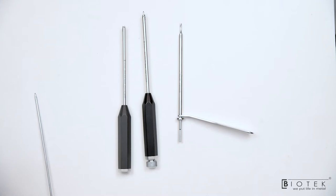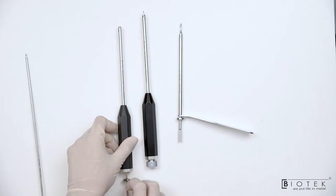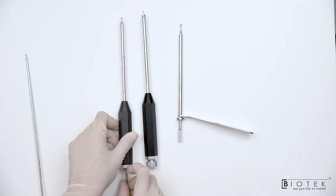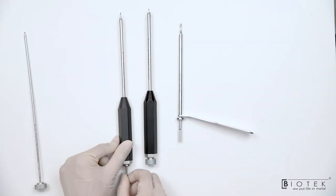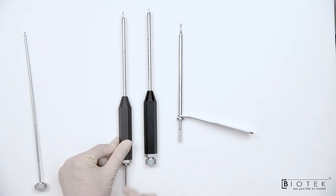After removing the trocar you can insert the anchor specific drill bit to create a pilot hole in glenoid, and it has an auto-stopper so that it will stop once the desired length is drilled in the bone.